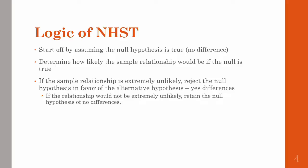Rejecting the null says yes, there's a difference between your groups in your experiment. But if the relationship you found wouldn't really be that unlikely under the assumption that the null is true, then you retain the null hypothesis of no differences. Another term for this is failing to reject the null hypothesis.